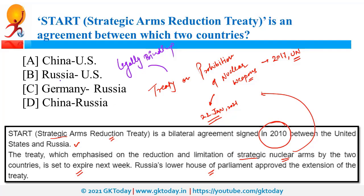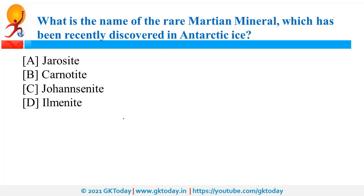Recently Russia was also in news because of the Open Skies Treaty, as Russia decided to quit this treaty after the exit of USA. The Open Skies Treaty was related to surveillance after prior approval from other countries.